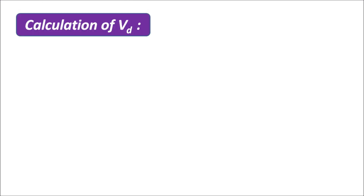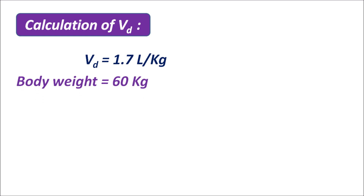For the volume of distribution: Vd is given as 1.7 liters per kg and the body weight is 60 kg. So the total volume of distribution Vd = 1.7 × 60 = 102 liters. The total apparent volume of distribution for the given patient is 102 liters.